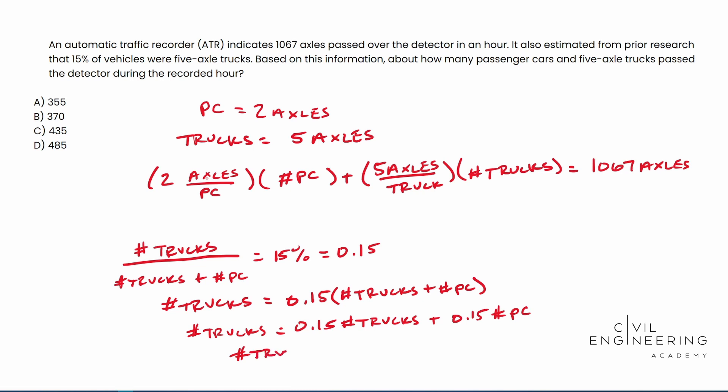Number of trucks minus 0.15 number of trucks, and this is equal to 0.15 times the number of passenger cars. So now we can divide by 0.15, 0.15 cancels that out when divided over here. I'm going to scroll down just a little bit here.